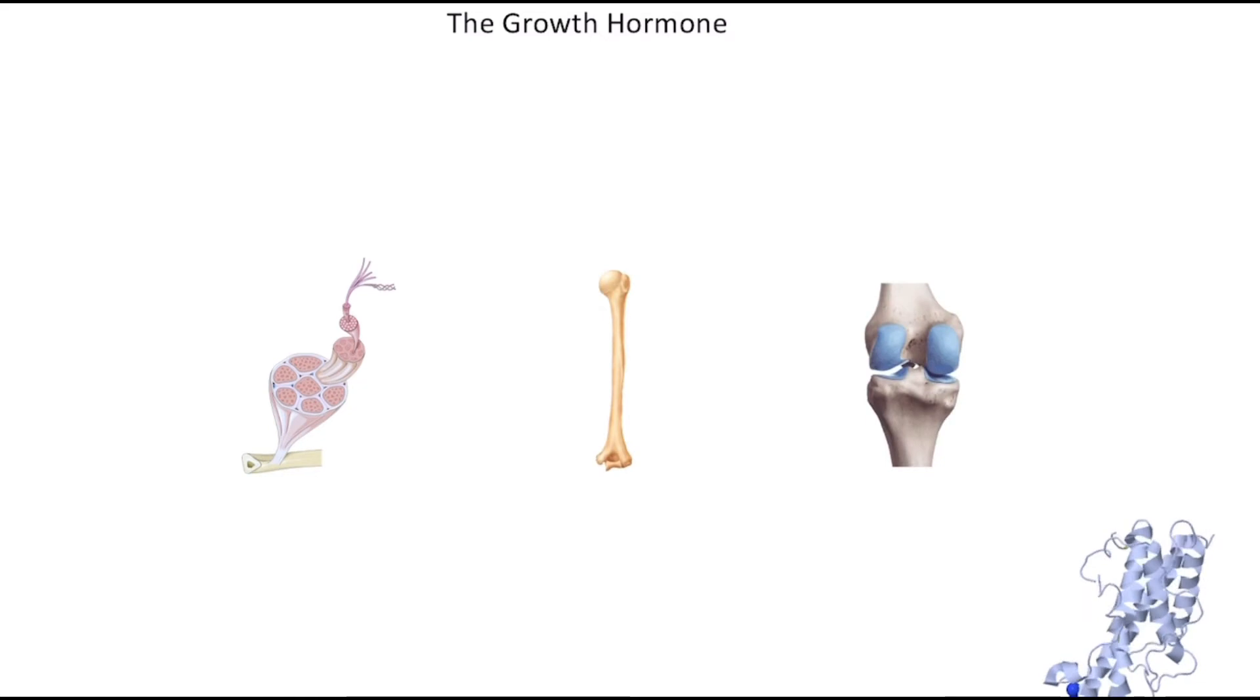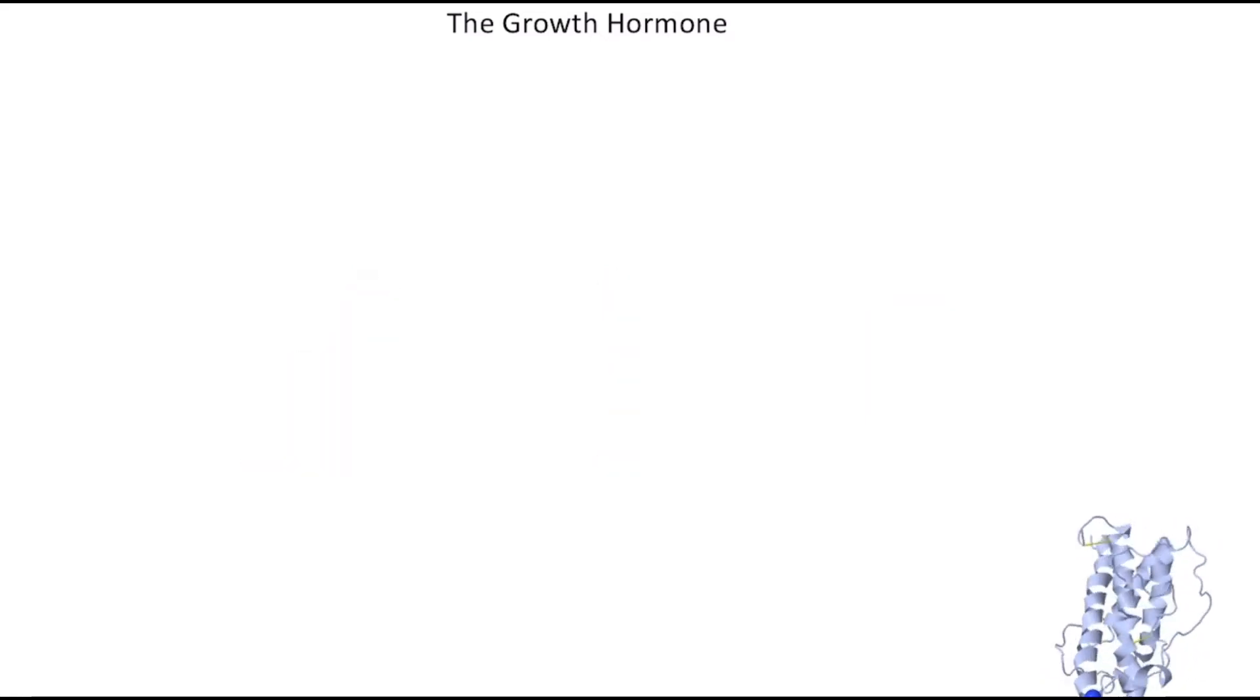As can be inferred by the name, GH promotes the growth of skeletal muscle, bone, and cartilage. It does so via two main pathways. The first pathway involves influencing metabolism. The second pathway involves influencing gene expression.